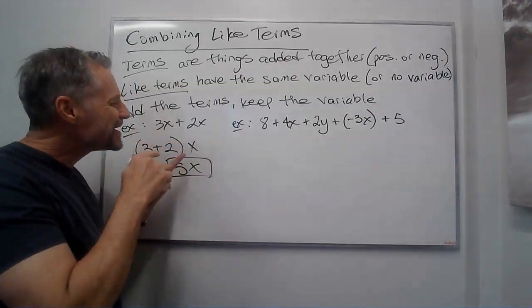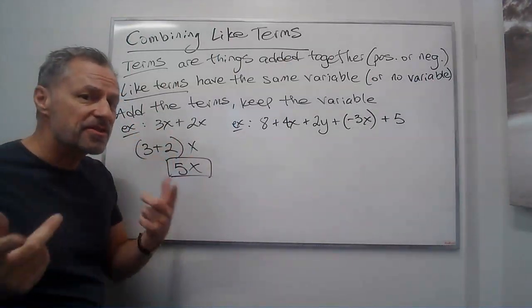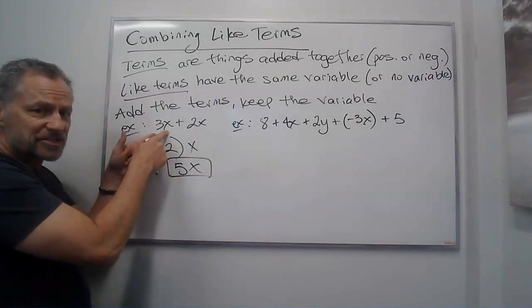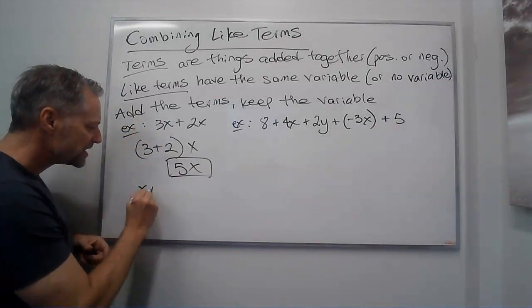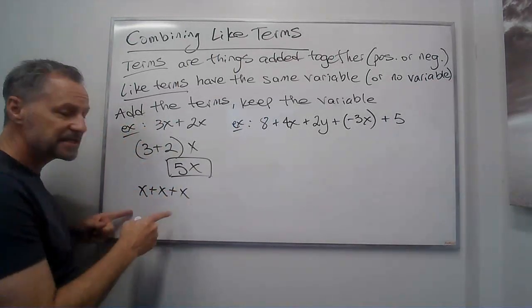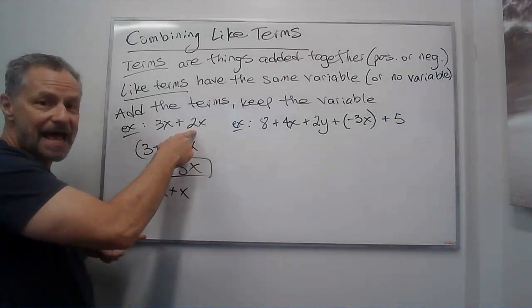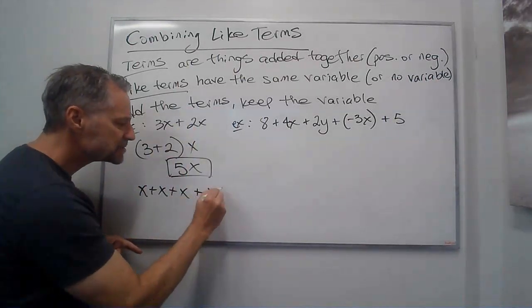Now if you're wondering why that works and shouldn't it be something other than x, think about this. 3x just means I have 3 x's. I have x plus x plus x, that's my 3x. I'm going to add 2 more x's to it so I add x plus x.